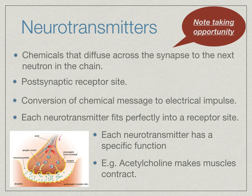Neurotransmitters are chemicals that diffuse across the synapse. They are responsible for converting an electrical impulse into a chemical message so that the impulse can be passed to the next neuron in the chain. Each neurotransmitter fits perfectly into a receptor site and has a specific function. For example, acetylcholine is found at each point where a motor neuron meets a muscle, and when released, it causes that muscle to contract.